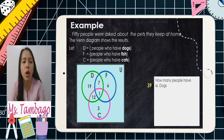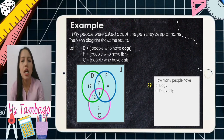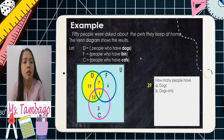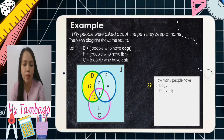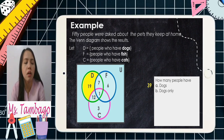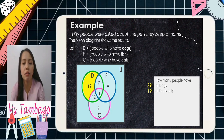Letter B: dogs only. What's the difference between 'dogs' and 'dogs only'? Looking at the green circle again, this time it refers only to those who exclusively have dogs. We remove the overlapping parts with the blue and pink circles. So we only have 19 — 19 people who have dogs only, with no other pets.